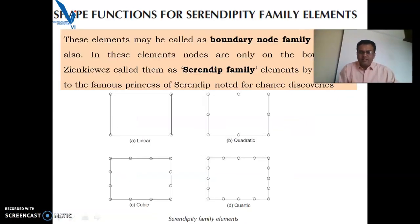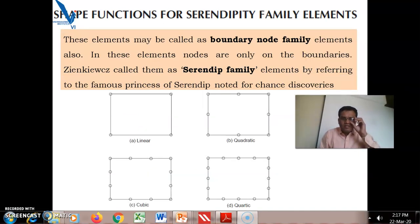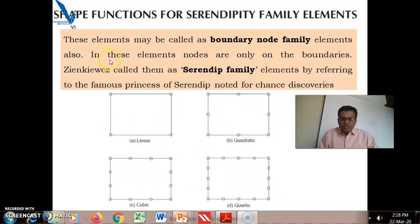We will now see the serendipity elements. These elements are called boundary node family elements, because all the nodes are only at the boundary — there is no center node. They are called the serendipity family elements, referring to the famous princess of Serendip, noted for chance discoveries.